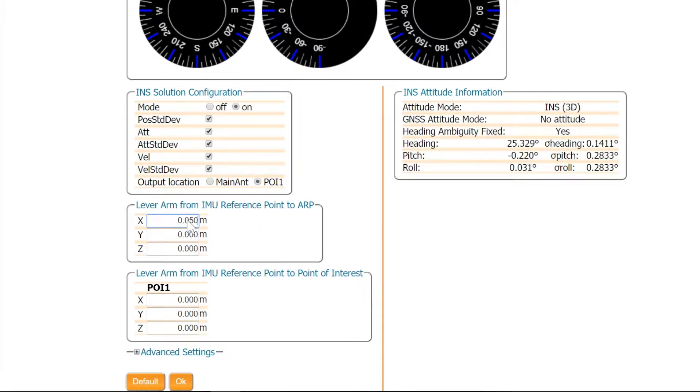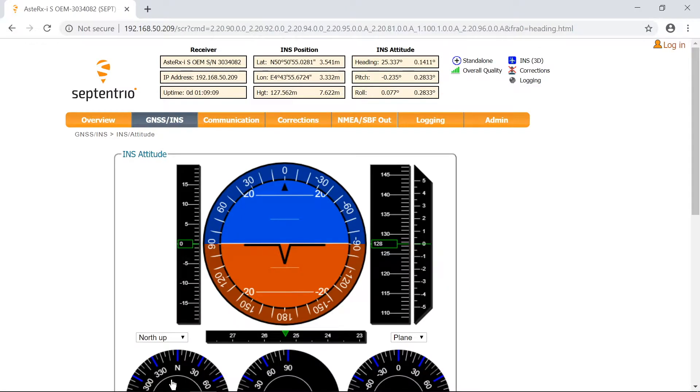Enter the lever arm coordinates and click on OK. With this configuration, the GNSS INS solution will be calculated at the IMU reference point.